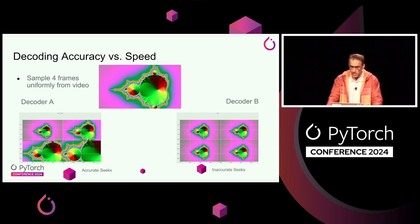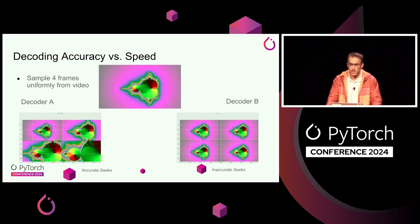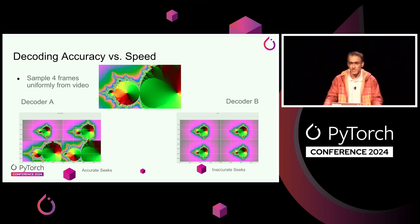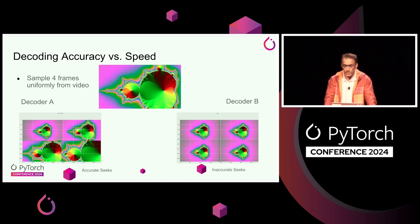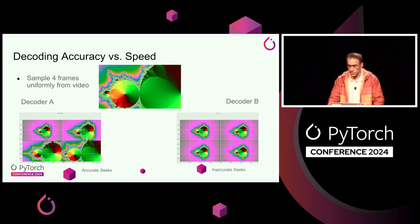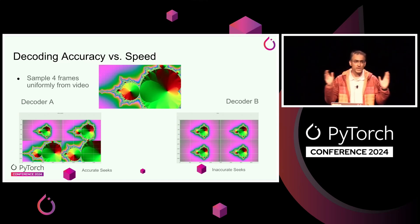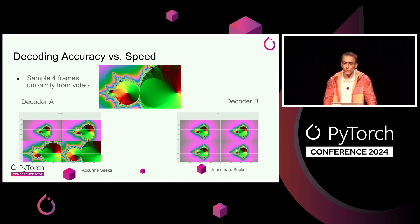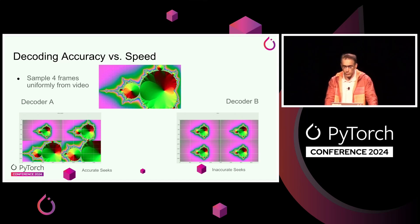Speaking of seeking in the middle of videos, there's an important gotcha. Some video decoders out there don't implement seeking correctly — they do what is called inaccurate seeks. If you give it a video and a timestamp, it may return a frame at a different timestamp, which is not valuable for inference or training. To demonstrate this, we generated a synthetic fractal video where each frame is different, and asked two decoders to decode four frames at four different timestamps. Decoder A returned four different frames as expected, but the PyAV decoder gave four copies of the exact same frame — not what users expect, and it can lead to poor model performance.